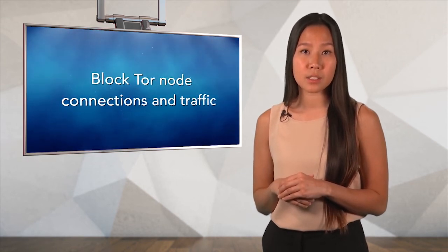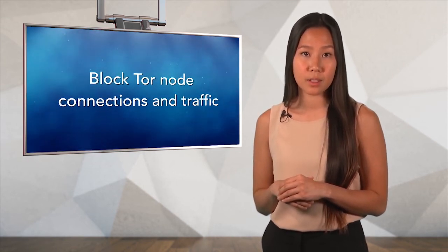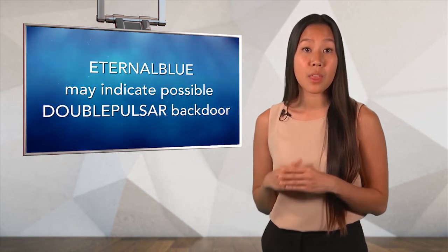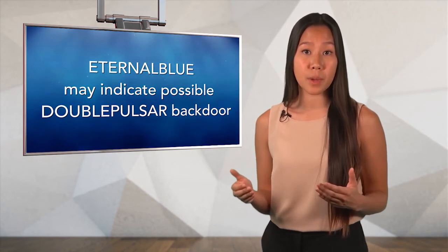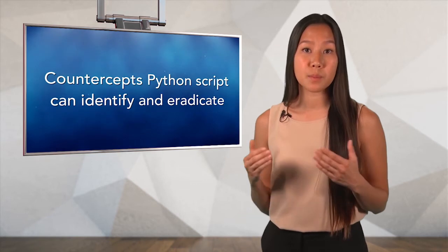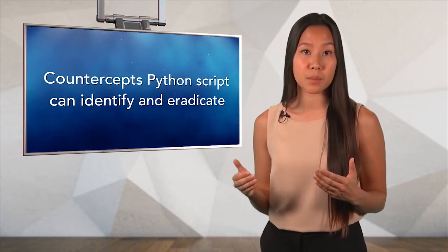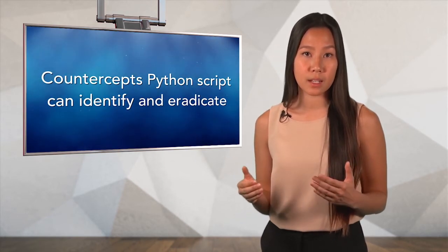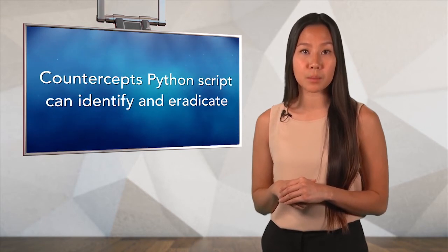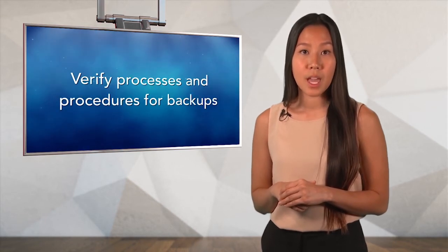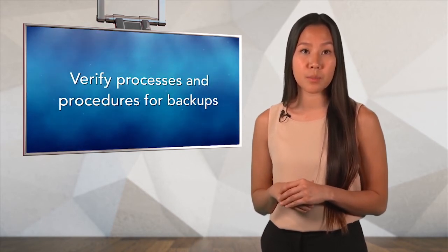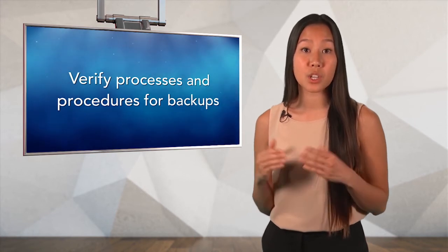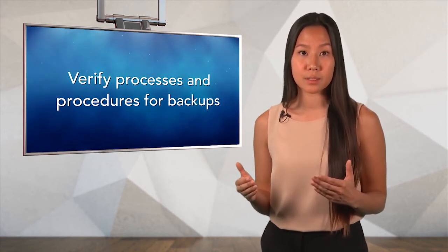Do not allow RDP and SMB connections directly from the internet. Block connections to Tor nodes and Tor traffic. If the infection vector was through EternalBlue, then the DoublePulsar backdoor may exist. CounterSIP's Python script can be used to help identify its existence and eradicate it — please see references for the GitHub link. Ensure processes and procedures for backup are functional and that data can be restored, and ensure the backup is not shared on the network.